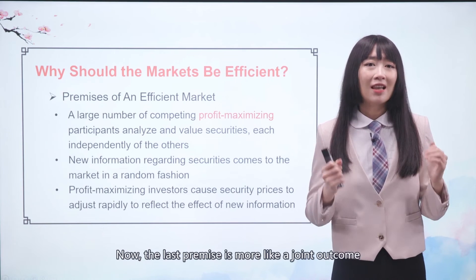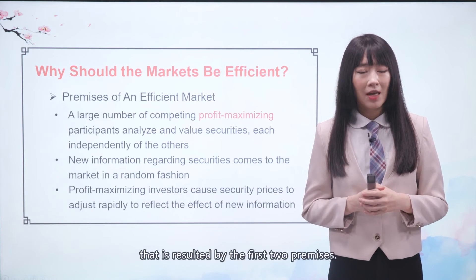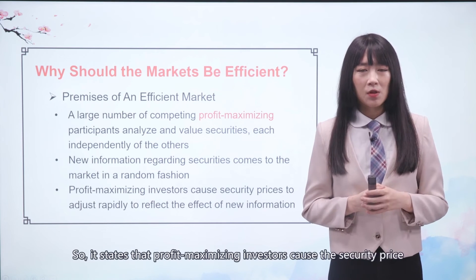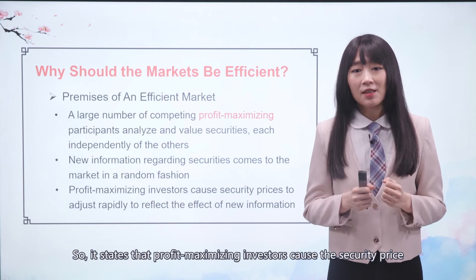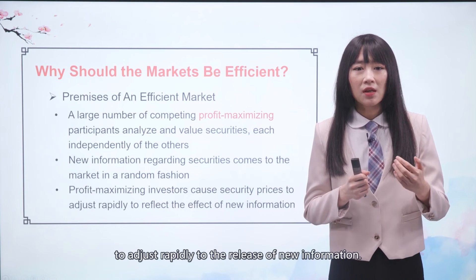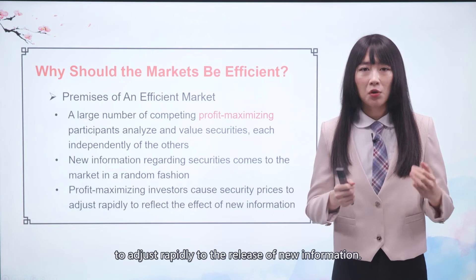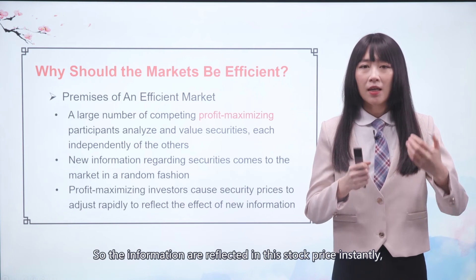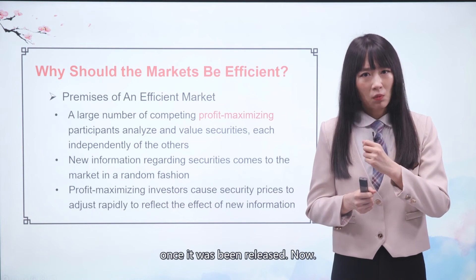The last premise is more like a joint outcome resulting from the first two premises. It states that profit-maximizing investors cause the security price to adjust rightfully to the release of new information, so the information is reflected in the stock price instantly once it is released.